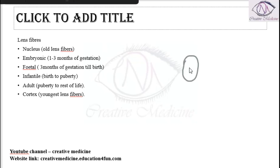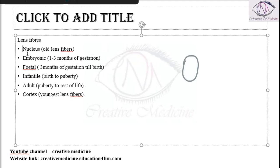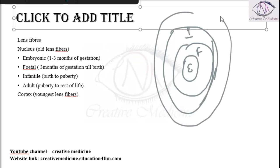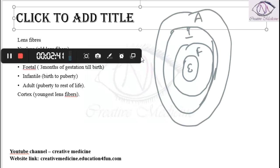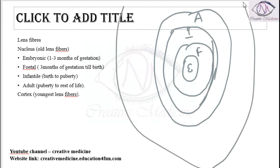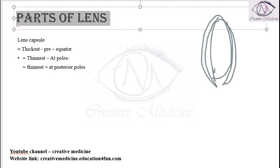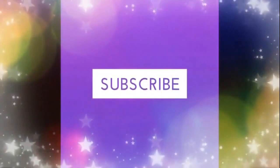In the lens we have two main regions: the nucleus and the cortex. The nucleus contains the oldest fibers — embryonic nucleus (1–3 months gestation), fetal nucleus (3 months to birth), infantile nucleus (birth to puberty), and adult nucleus (puberty onward). The cortex, located around the nucleus, contains the youngest fibers.